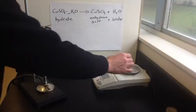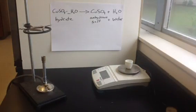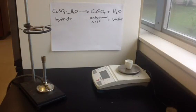And so now we'll find the mass of the anhydrous salt in the crucible. And the mass of the anhydrous salt and the crucible is 28.31 grams.